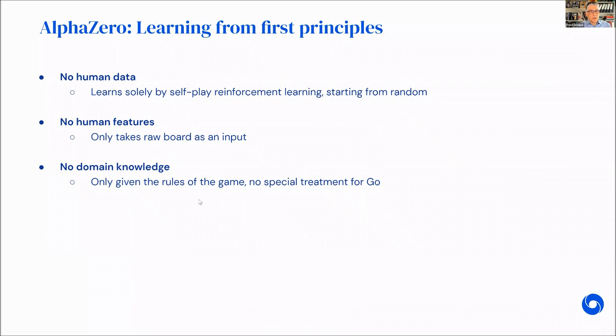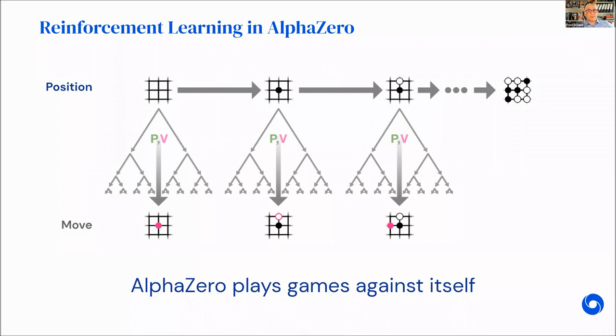We wanted to create a system that plays strongly without human data, solely by self-play reinforcement learning, essentially starting from random. We also wanted to avoid adding any human features. In AlphaGo, we had human design in how we represented the board as a feature vector. We wanted to get rid of that. Finally, we wanted to avoid any specific domain knowledge. This needs to work for other games as well, not just for Go.